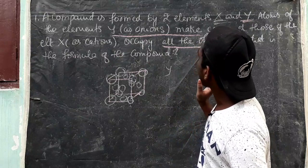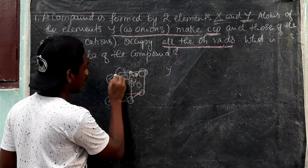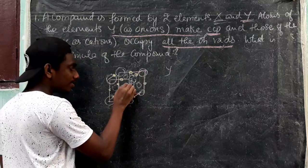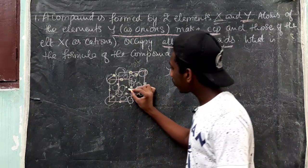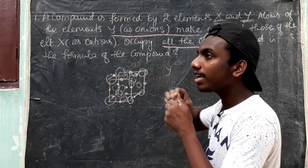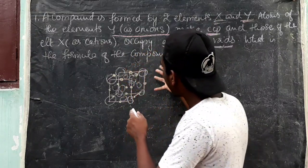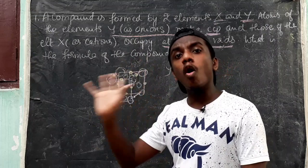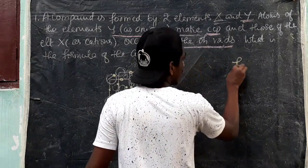X occupies all the octahedral voids. Octahedral voids are found in the edge centers plus the body center. In an FCC unit cell, in our face centers and corners, the effective number of particles gives the rank of the FCC.